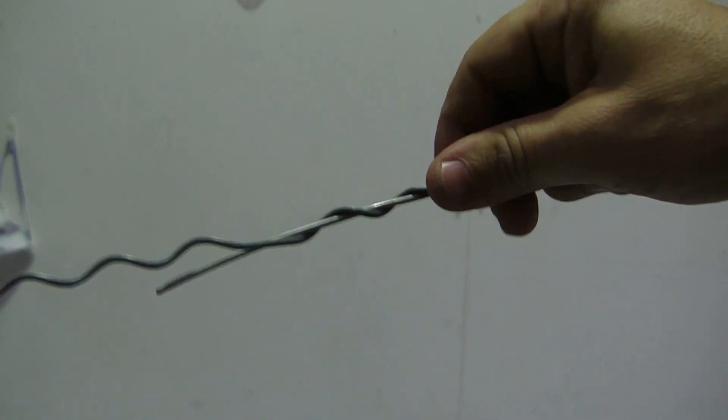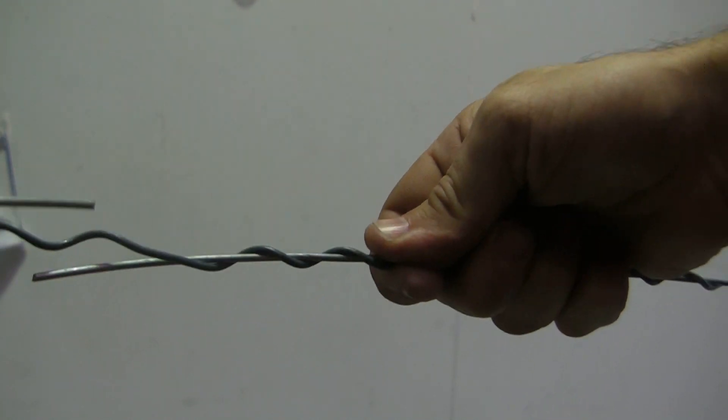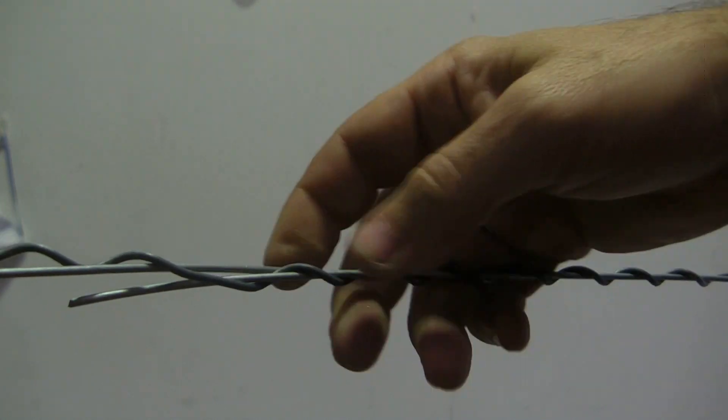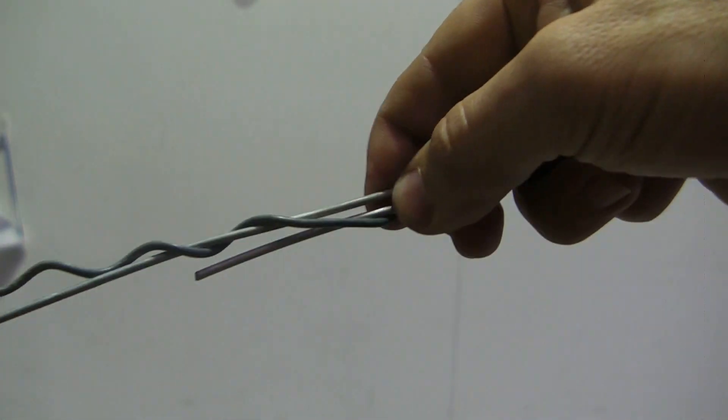But when you're joining wire, if you place the second wire in behind the first wire at the center here, and then you wrap this second side on.